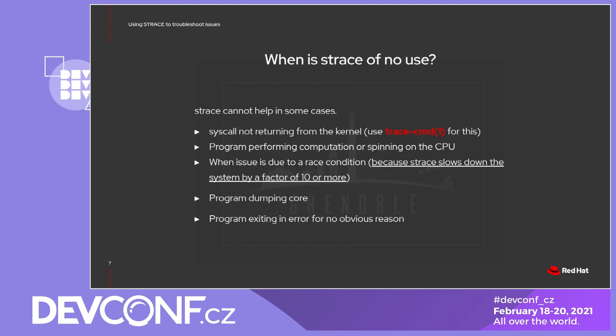Another scenario where it won't help much is when the issue is due to a race condition — for example, start-up of services race together and lead to errors. Still, if you strace both services and see that the issue goes away, you can guess that the root cause is likely a race condition, which doesn't show up because strace slows down the processes too much. When a program doesn't crash, you need to use GDB. Finally, when a program exits with no obvious reasons, for example with no error message at all, strace won't help much, though checking the failing syscalls can give you some hints from time to time.